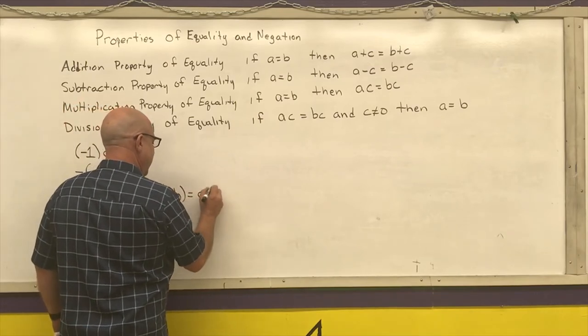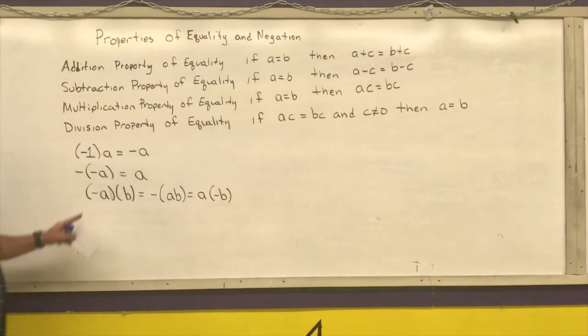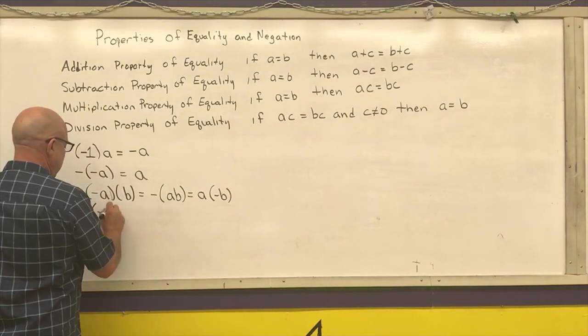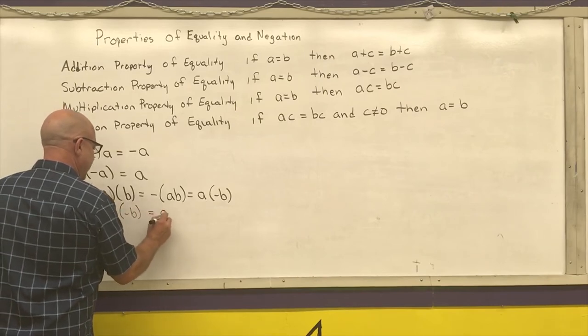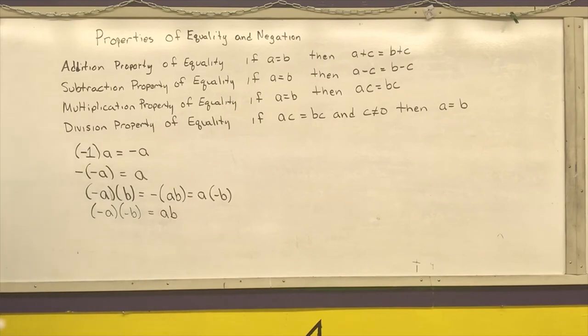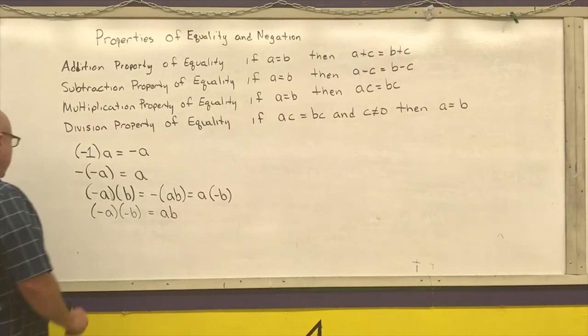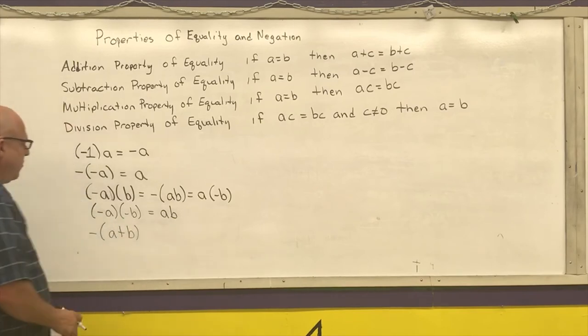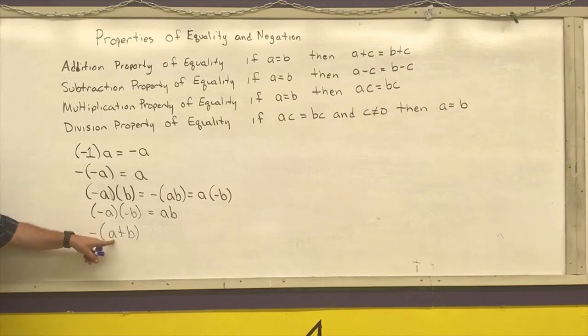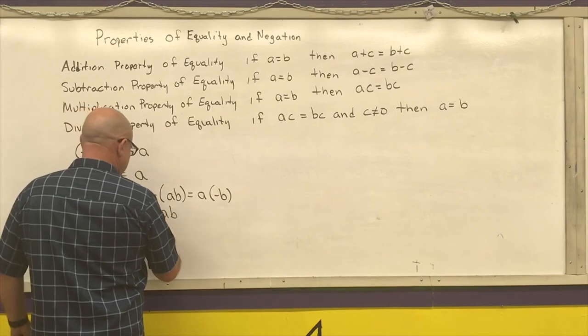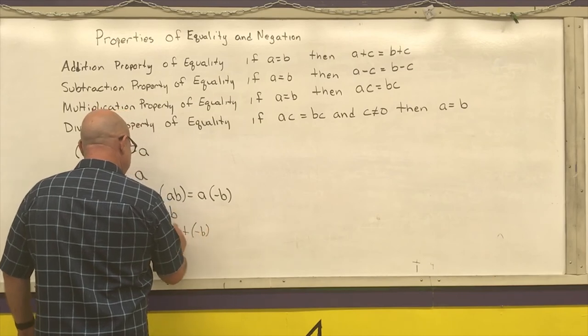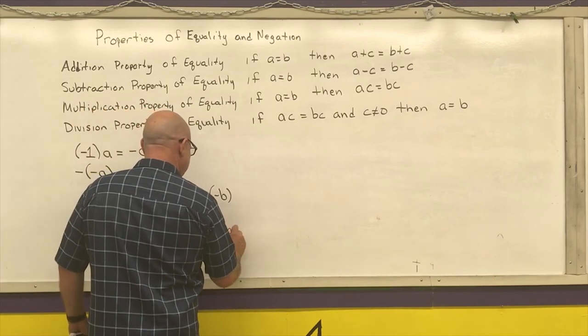Or I can write it as, I can move that negative sign anywhere in those three places. Two negative numbers multiply together to give me a positive number. And a negative number, remember that this is actually a negative one out here, and that negative one, using the distributive property, gives me negative A plus a negative B, which I can write as negative A minus B.